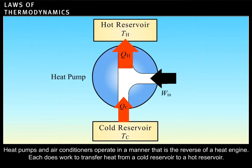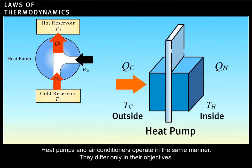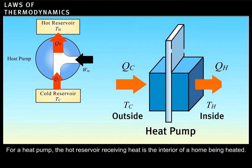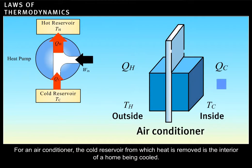Heat pumps and air conditioners operate in a manner that is the reverse of a heat engine. Each does work to transfer heat from a cold reservoir to a hot reservoir. Heat pumps and air conditioners operate in the same manner. They differ only in their objectives. For a heat pump, the hot reservoir receiving heat is the interior of a home being heated. For an air conditioner, the cold reservoir from which heat is removed is the interior of a home being cooled.